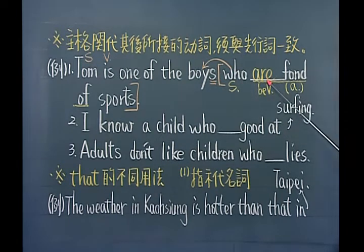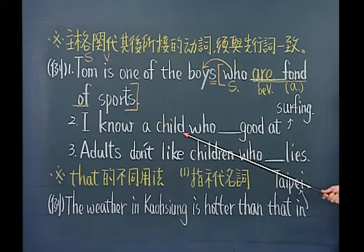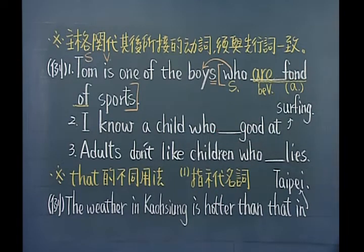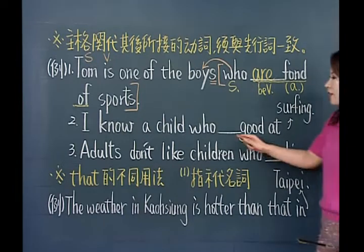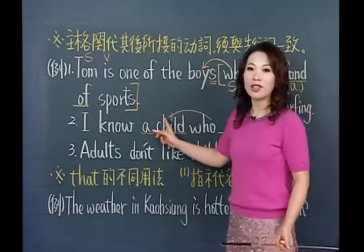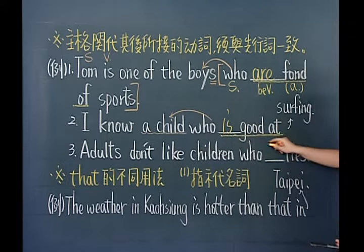主格关带后面所接的动词要跟先行词一致，因为主格关带代替的就是这个先行词。这个代名词看不出单复数，但我们知道它代替boys是复数，所以动词用复数。第二个例句：I know a child，这里有个片语叫be good at，good也是形容词，所以前面配be动词。who指的就是前面的先行词a child，是单数，所以配单数动词is。be good at表示精通什么方面。